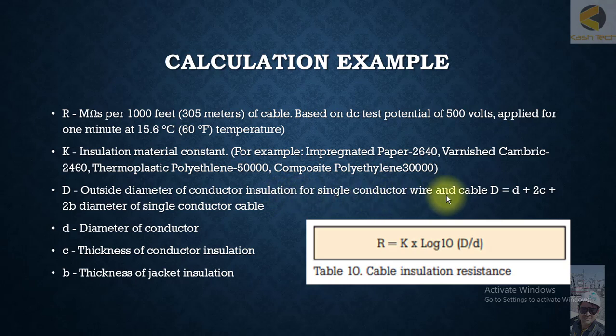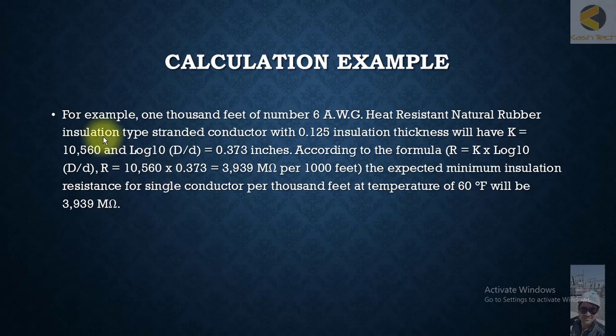D is outside diameter of conductor insulation for single conductor wire and cable. D is equal to d plus 2c plus 2b diameter of the single conductor cable, where small d is diameter of conductor, c is thickness of conductor insulation, b is thickness of jacket insulation.